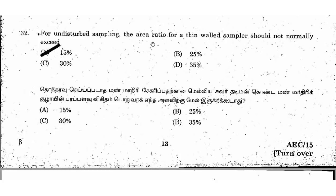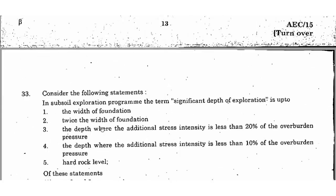For undisturbed sampling, the area ratio for a thin-walled sampler should not normally exceed 15%. There is a condition to keep it as low as possible. So the suitable answer is option A, 15%.